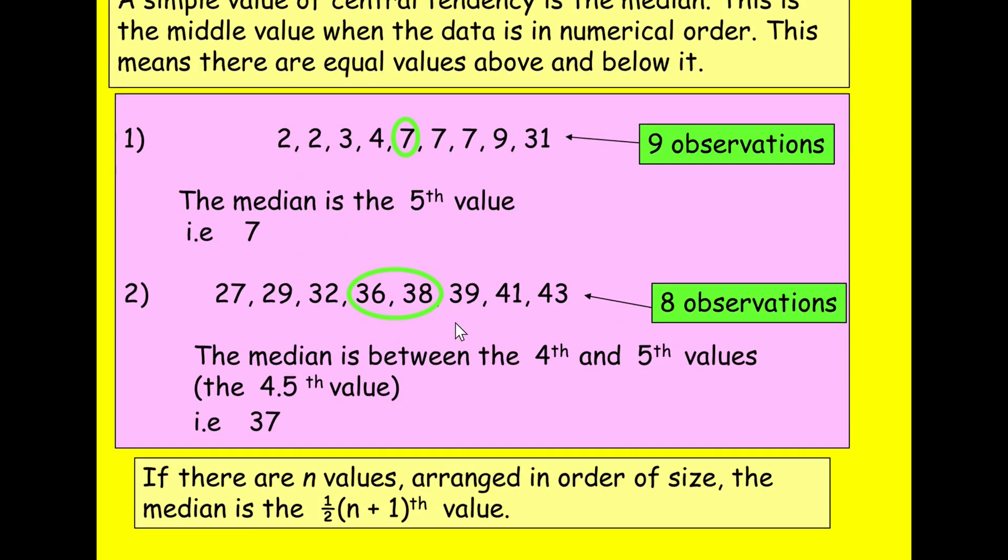There's another way you can do this, and that is to work out the position by taking the number of values, adding one, and dividing it by two. So if I have nine observations, I do nine plus one, divided by two, which is five, and that tells me exactly where to look. So I don't have to, you know, I don't have to kind of count, I don't even have to know, I don't have to kind of cross them off, and see what I get.